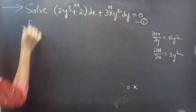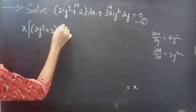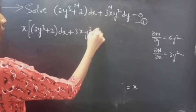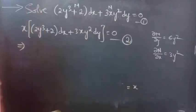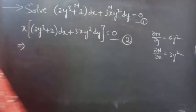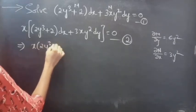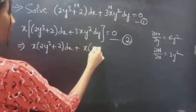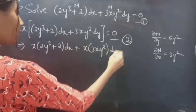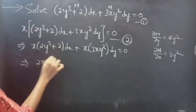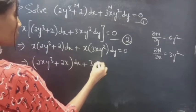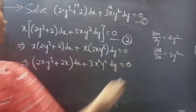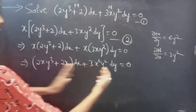Multiplying x with the given equation gives equation 2: x(2y³ + 2)dx + x(3xy²)dy = 0. Expanding: (2xy³ + 2x)dx + (3x²y²)dy = 0, which is in the form M1·dx + N1·dy = 0.